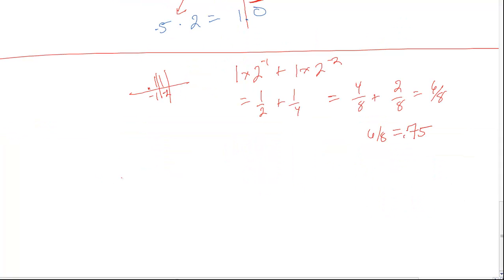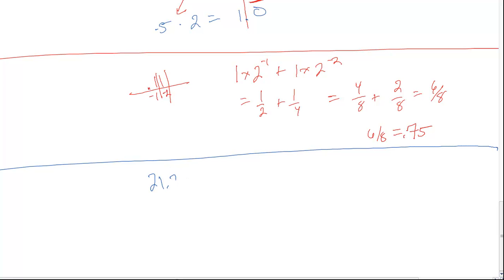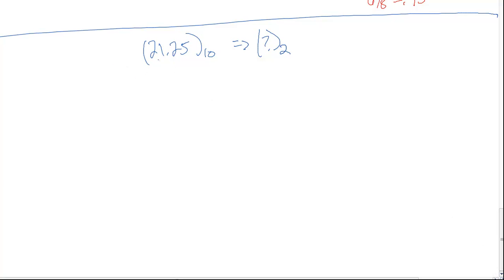So that's the multiply by 2 method. What if we have a mixed number? Let's do 21.25 in base 10 — what is it equal to in base 2? For a number that has both a whole part and a fractional part, we just break it up at the Radix point. The whole part we handle with the divide by 2 method, and the fractional part we handle with the multiply by 2 method.